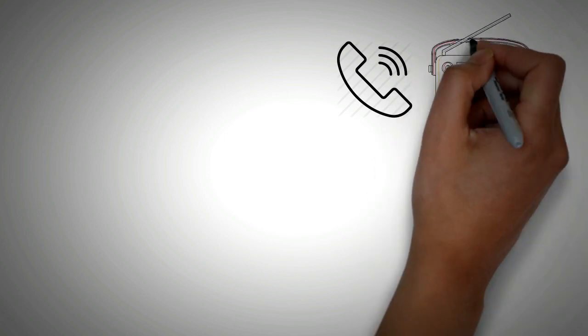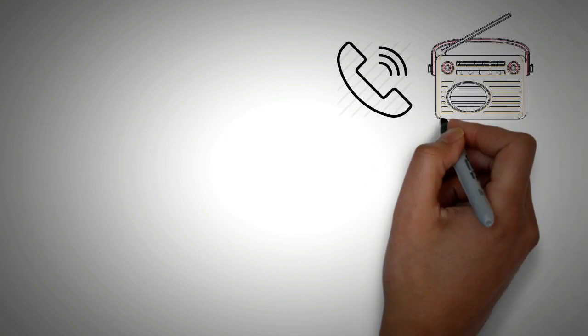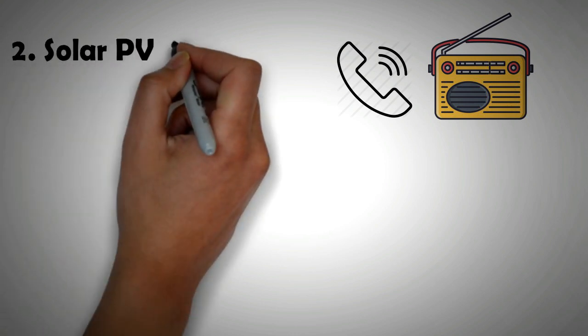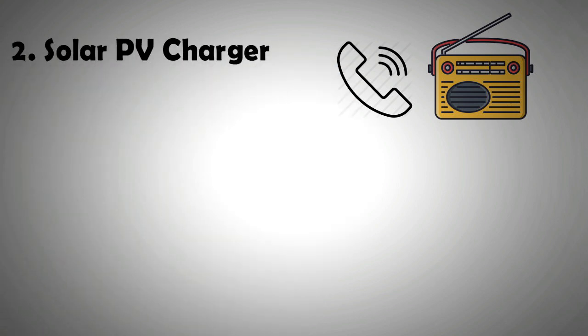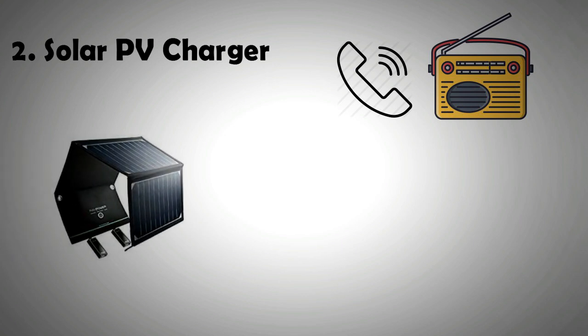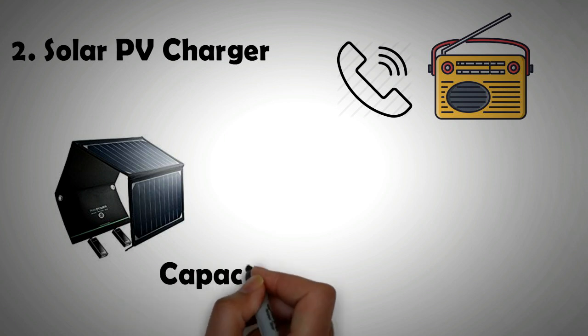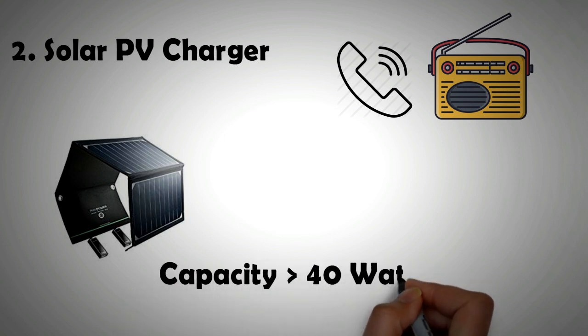To maintain a line of communication and receive information, electricity is required and therefore the second item in the survival kit is a solar PV charger. There are a number of portable solar PV chargers available in the market for a price that is easy on the pocket. These waterproof foldable chargers require small storage space and are available in power capacity of 40 watts and even more. They will easily charge a cell phone and keep the GPS system and radio running.